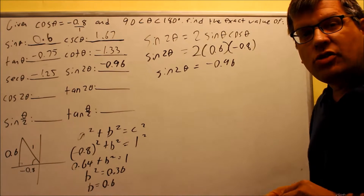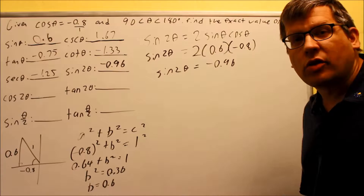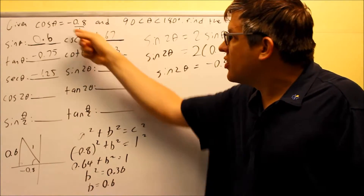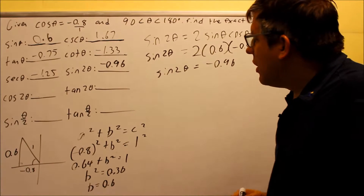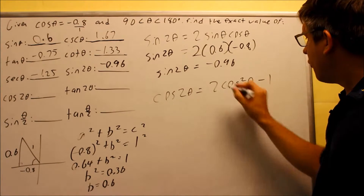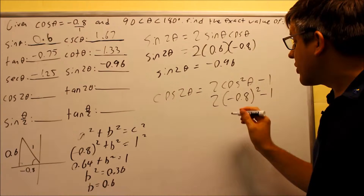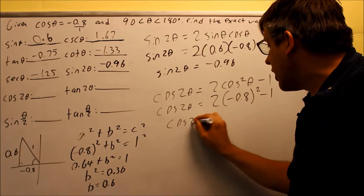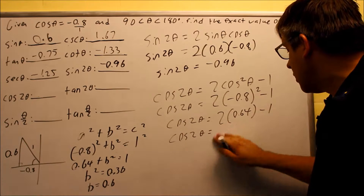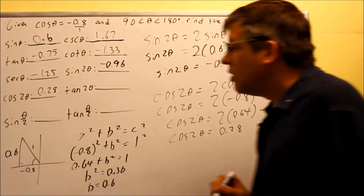For cosine 2θ, there are three formulas: cosine²θ minus sine²θ, 1 minus 2sine²θ, or 2cosine²θ minus 1. I'll use 2cos²θ minus 1, since cosine was the value originally given — using the given value means we know that number is correct. Substituting negative 0.8: 2 times (negative 0.8)² minus 1 equals 2 times 0.64 minus 1, which equals 0.28. So cosine 2θ equals 0.28.